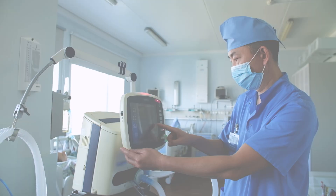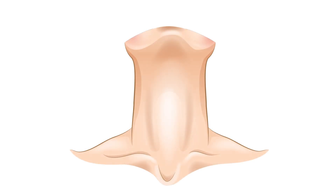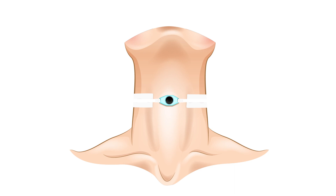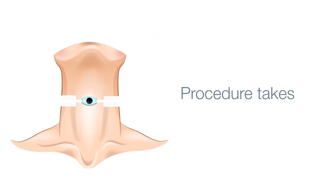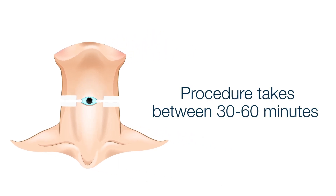Once the patient is under anesthesia, the skin will be cleaned. The doctor will make an incision into the skin on the neck and into the windpipe. The tracheostomy tube is then placed through the incision. The trach tube is held in place with sutures and a tie that goes around the neck. The tracheotomy procedure takes between 30 and 60 minutes.